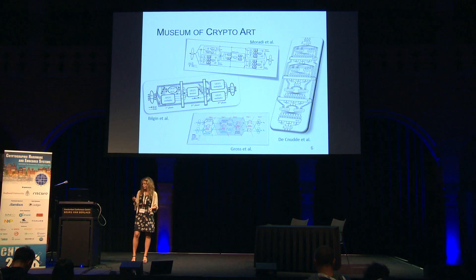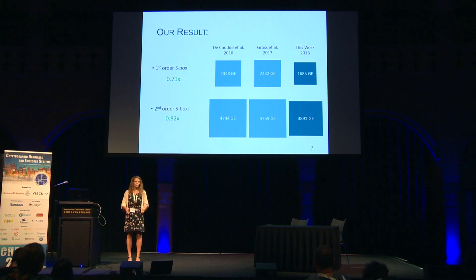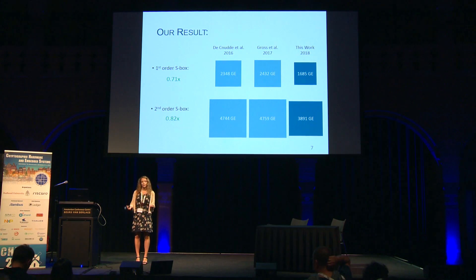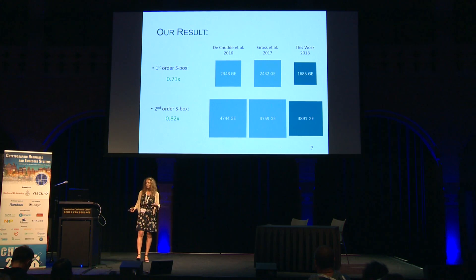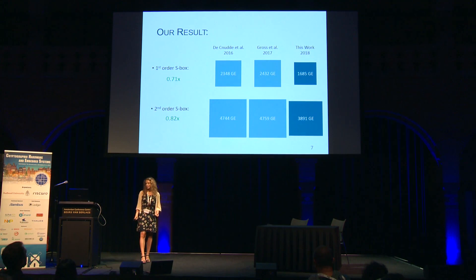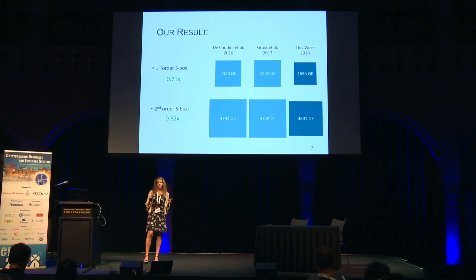I'll skip ahead to our results. We present a first-order AES S-box that is 29% smaller than the state-of-the-art — comparing to the two best implementations of recent years, which happen to have been made by the previous two speakers of this session. We also present a second-order AES S-box that is 18% smaller, with similar randomness and latency costs. Best of all, we didn't need the tower field approach.